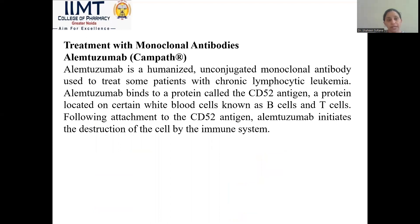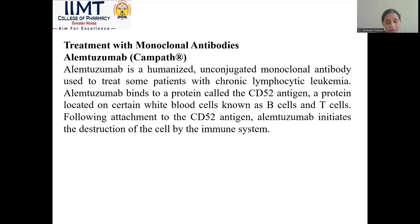Treatment with monoclonal antibodies: Alemtuzumab is a humanized, unconjugated monoclonal antibody used to treat patients with leukemia. It binds with the protein known as CD52 antigen, a protein located on the surface of white blood cells such as B cells and T cells. Following attachment to the antigen, alemtuzumab initiates the destruction of the cell by immune system mechanisms.